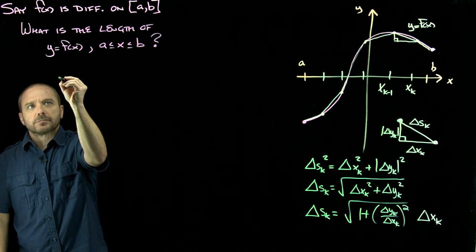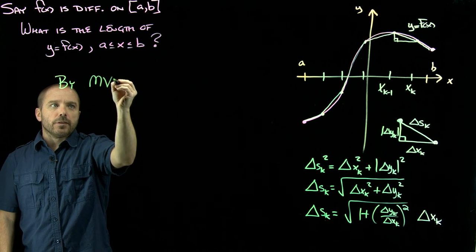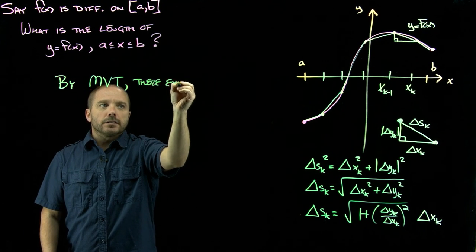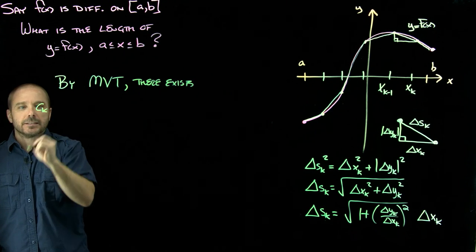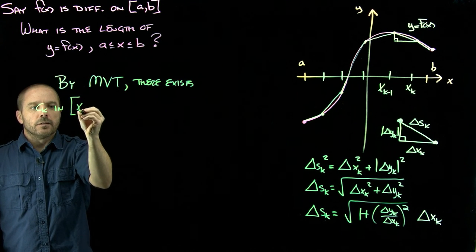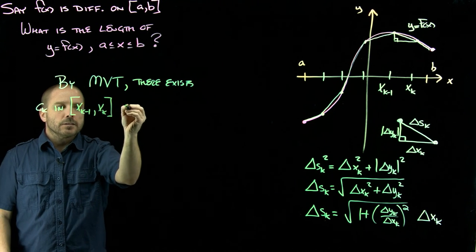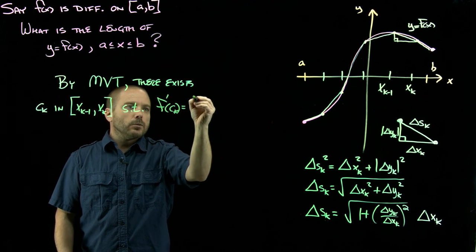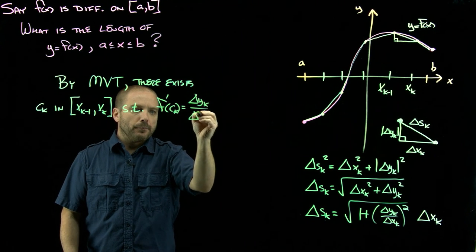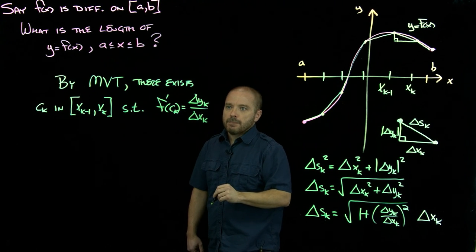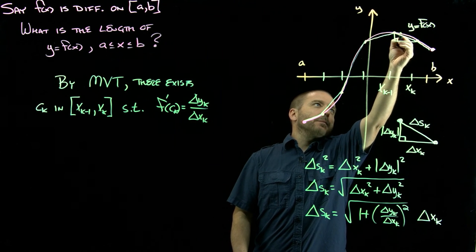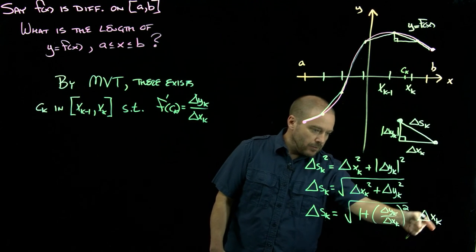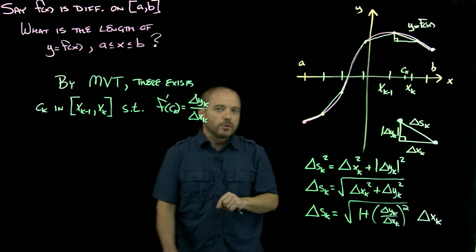By what we call the mean value theorem in calc one, there exists some point—we don't know where it is, but the key is it exists—there exists some c sub k in that interval from x sub k minus 1 to x sub k, such that the derivative of our function there is equal to the slope of that secant line. In my picture, maybe that's right about there—that's the c sub k we're going to be using. Let's rewrite this now, replacing this with that derivative we know from the mean value theorem.